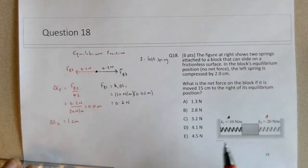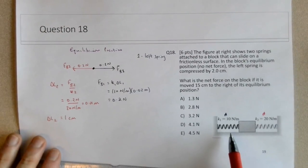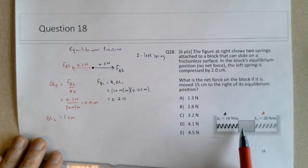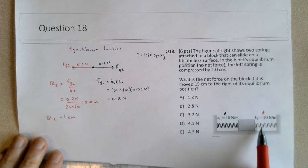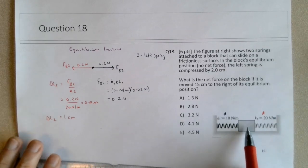So in the equilibrium position, the left spring is compressed 2 centimeters pushing the block to the right, and the right spring is compressed 1 centimeter pushing the block to the left equally, to give it no net force.